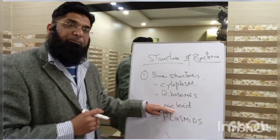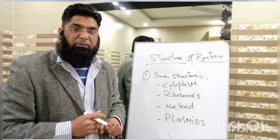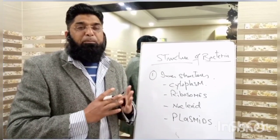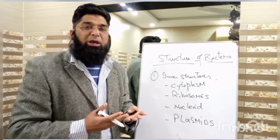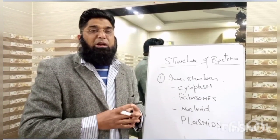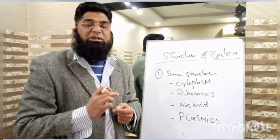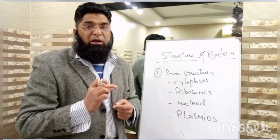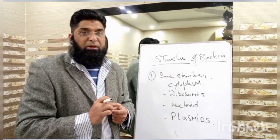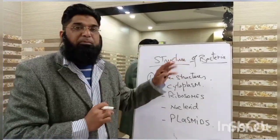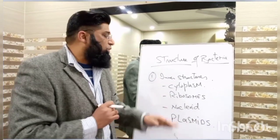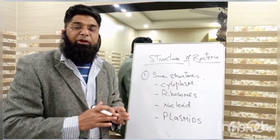Number three: nucleoid. Nucleoid is the genetic material — simply put, the DNA material of the bacterial cell — which is located in the cytoplasm. Bacteria are actually prokaryotes; we call microorganisms prokaryotes when they do not have a well-defined nucleus — that is, their nuclear material is not surrounded by a definite wall. Similarly, the DNA material of a bacterial cell is floating in the cytoplasm without any definite wall.